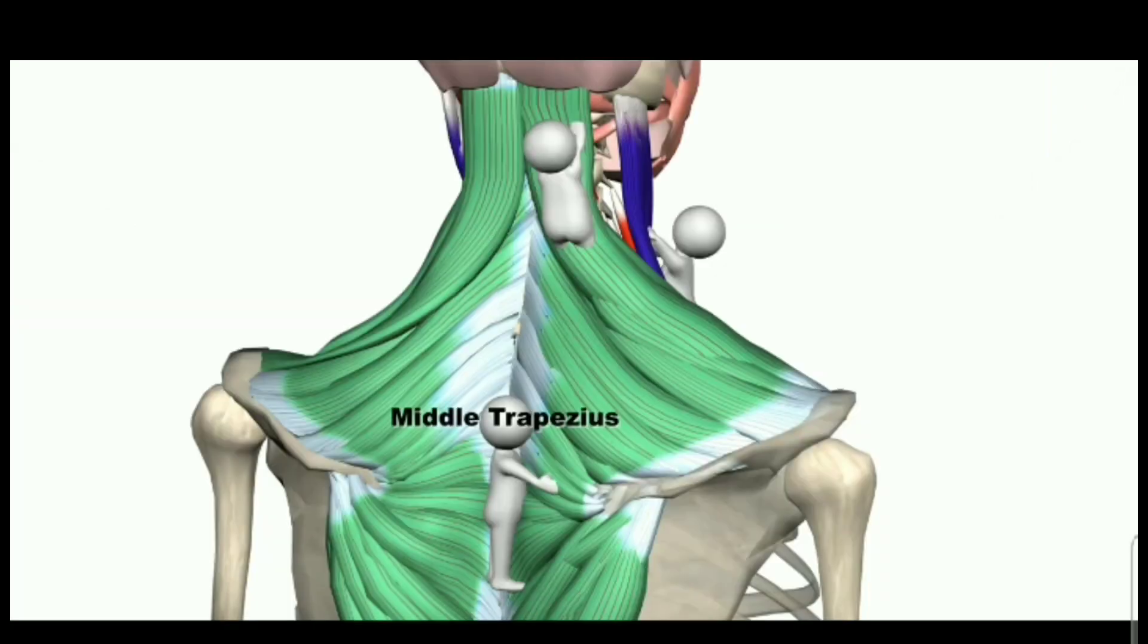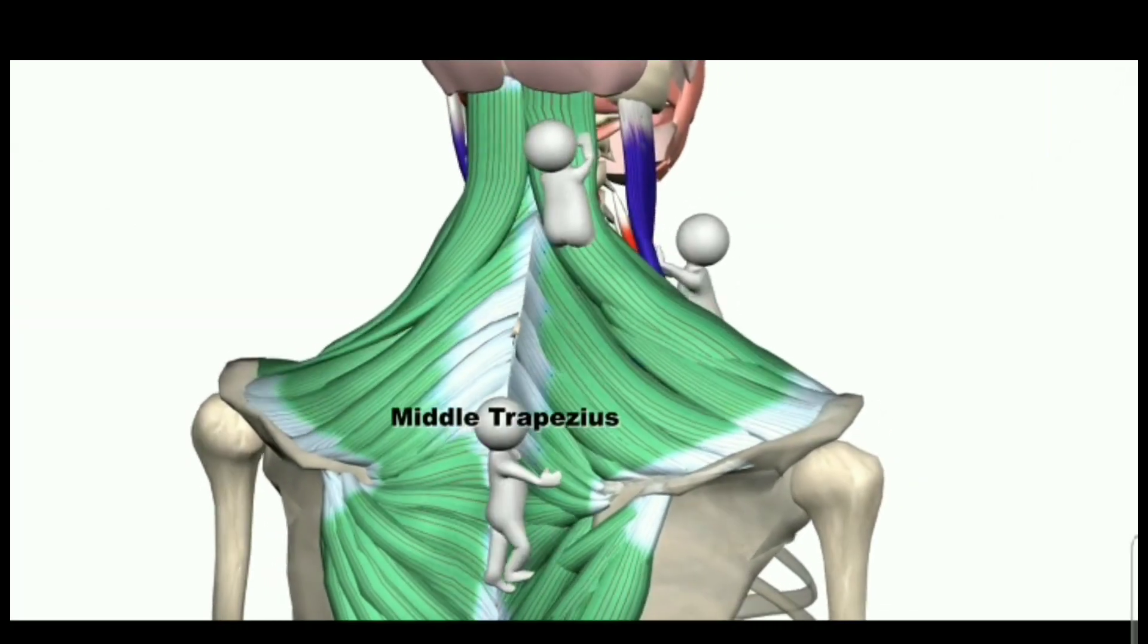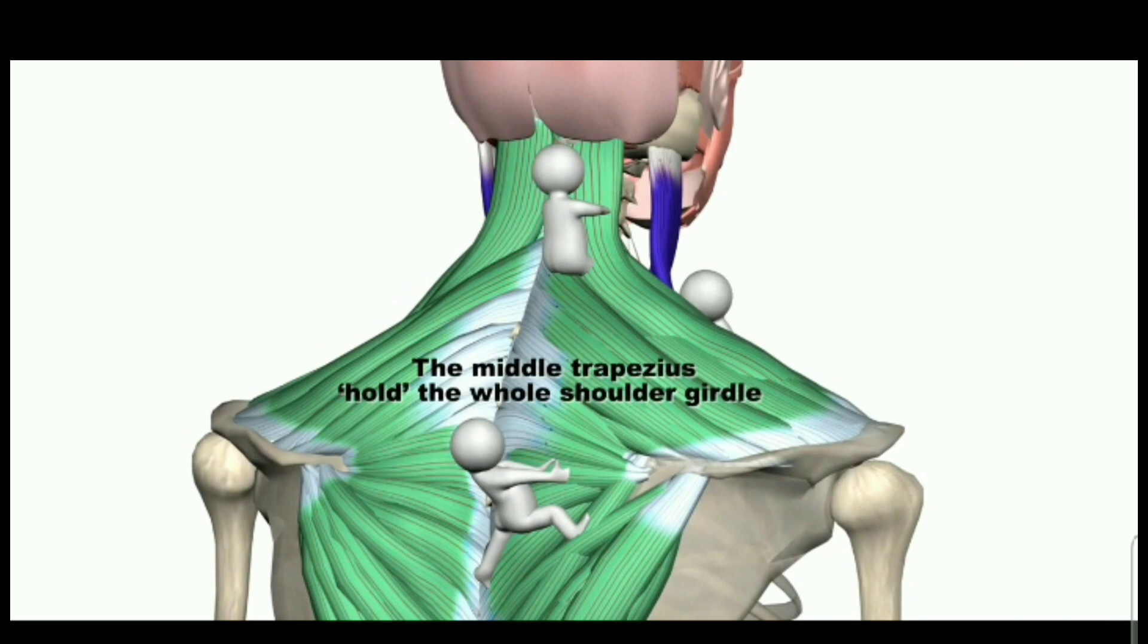For example, the middle trapezius becomes locked long during forward head posture, kyphosis, or rounded shoulders.